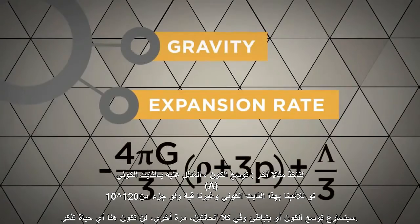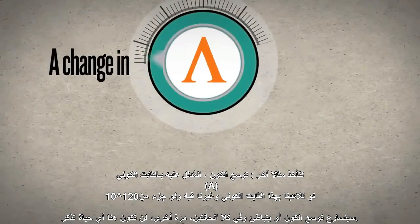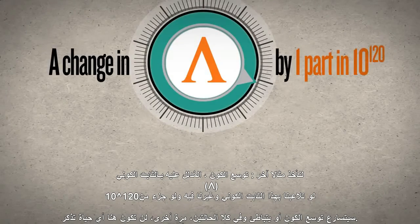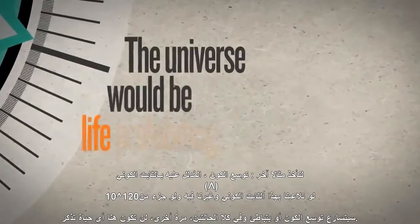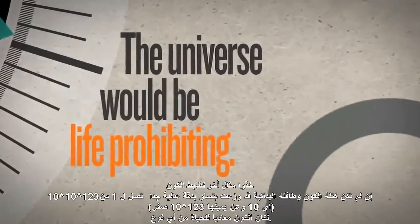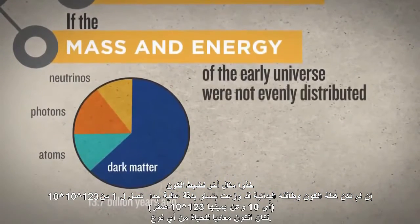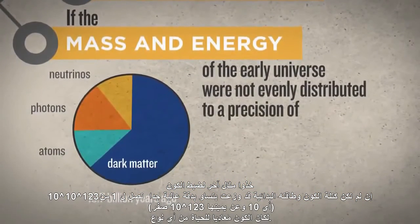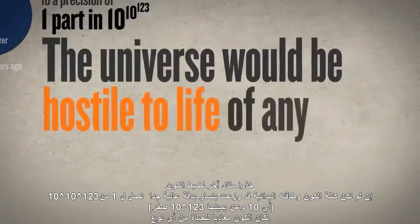Or consider the expansion rate of the universe, driven by the cosmological constant. A change in its value by a mere one part in 10 to the 120th parts would cause the universe to expand too rapidly or too slowly — in either case, the universe would again be life-prohibiting. Or another example of fine-tuning: if the mass and energy of the early universe were not evenly distributed to an incomprehensible precision of one part in 10 to the 10 to the 123rd, the universe would be hostile to life of any kind.